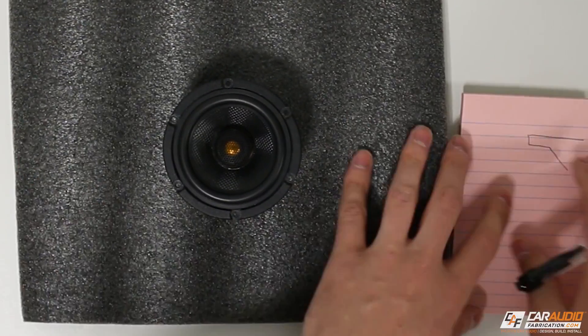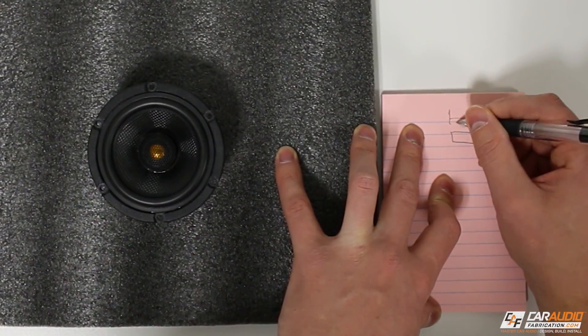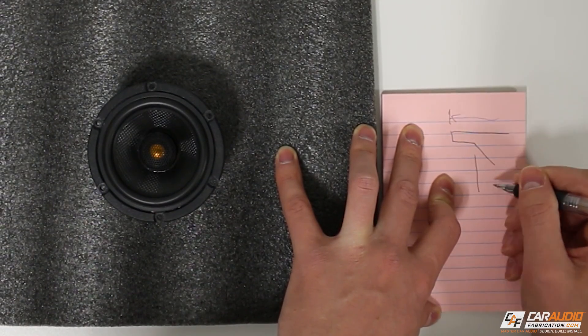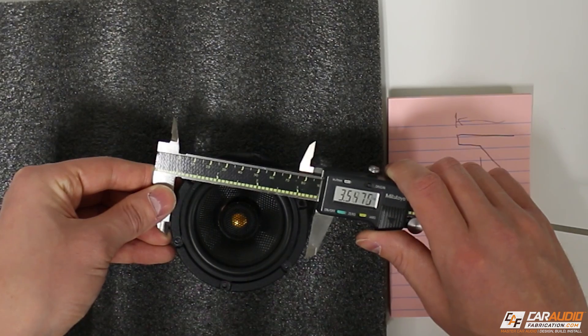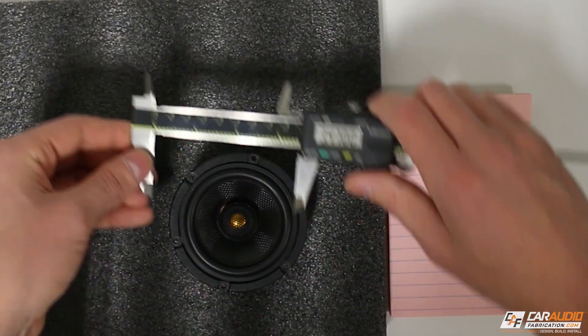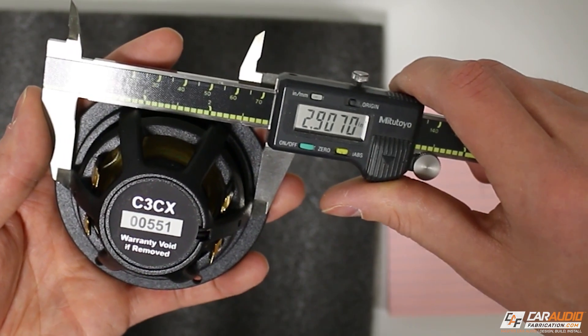Let's imagine that this is a side view of the speaker. We're going to get the overall diameter, and then we're also going to get the cutout diameter. So overall it's about 3.47, and then the cut diameter is about 2.90.